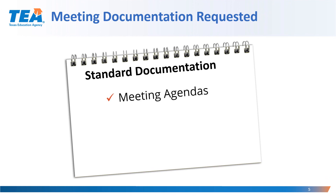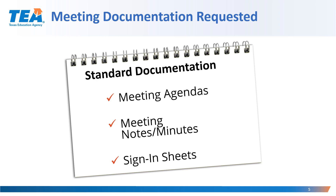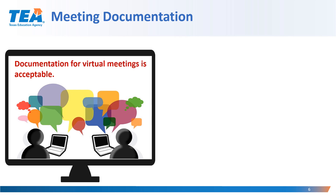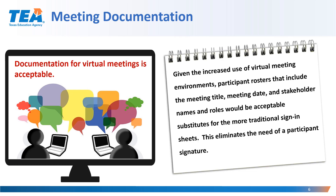If meeting documentation is to be provided for any requirement, please consider the following. The standard meeting documentation that an LEA should maintain locally includes meeting agendas, meeting minutes, notes, and sign-in sheets. Please note that documentation for virtual meetings is acceptable. Given the increased use of virtual meeting environments, participant rosters that include the meeting title, meeting date, and stakeholder names and roles would be acceptable substitutes for the more traditional sign-in sheets. This eliminates the need of a participant's signature.